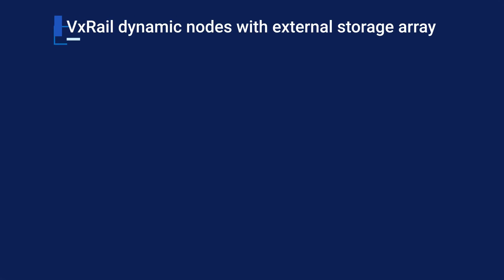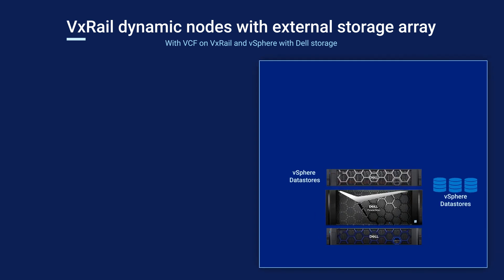Next, let's talk about using Dynamic Nodes with Dell External Storage Arrays, covering both VCF on VxRail and non-VCF deployments, as the details are very similar. For external storage, there are four supported array types: PowerStore T, PowerMax, Unity XT, and PowerFlex. The first three SAN options support NVMe over TCP, FC, NFS, and iSCSI protocols. PowerFlex support was added with 7.0.300 and supports NVMe over TCP and a proprietary TCP-based protocol.